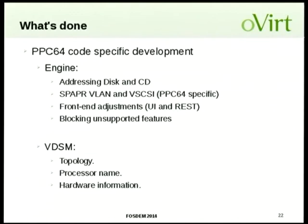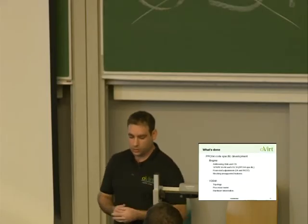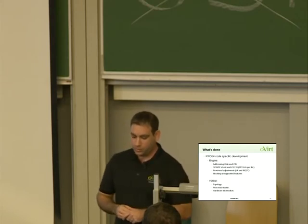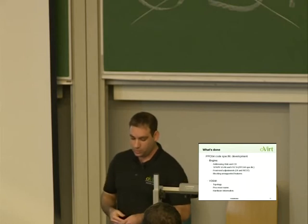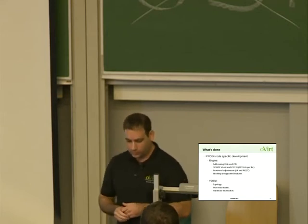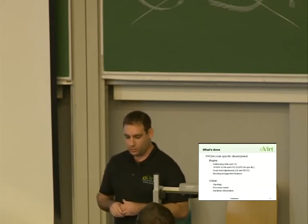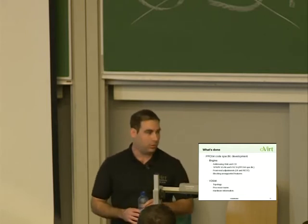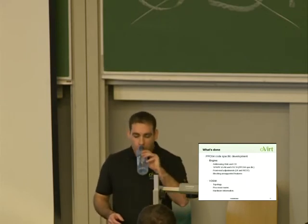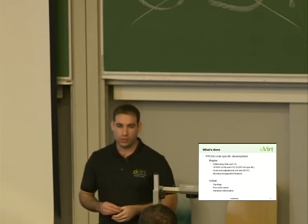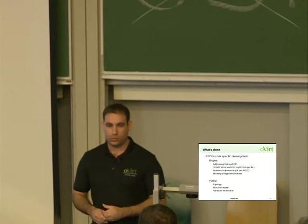Specific code that had to be done: first is PCI addressing, because addressing in PPC64 is different from x86. We also added the specific PPC64 devices for VLAN and VSCSI — the SPAPR devices. There were a lot of front-end adjustments to filter out only the relevant choices for PPC, and we had to block unsupported features like snapshotting and migration. In VDSM, there were changes in the topology — we added the processor name to the reported information and hardware information changes for the new PPC.